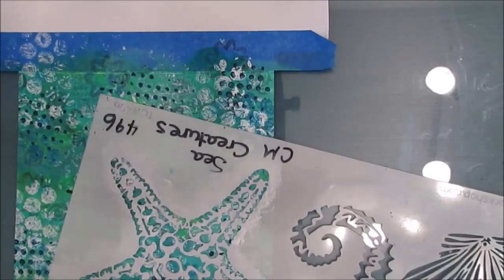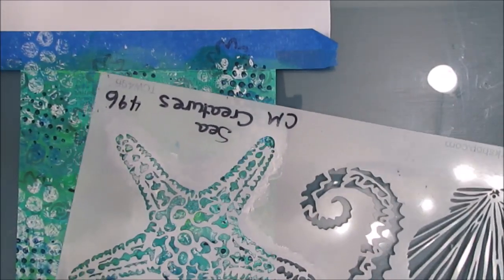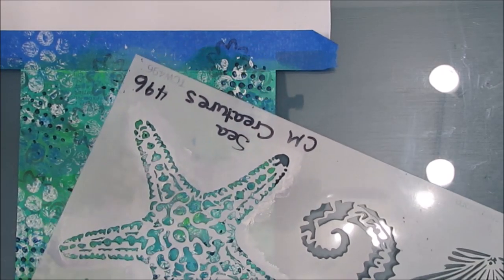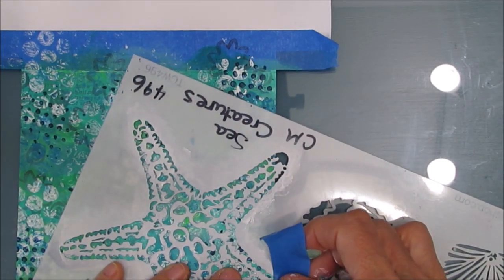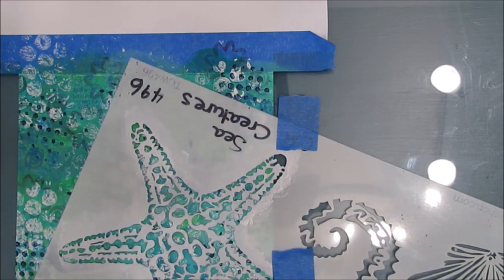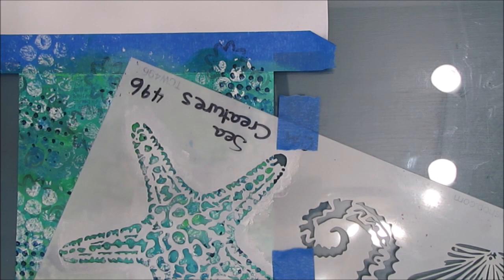Now I'm going to use this sea creatures stencil. This is the 12 by 12 one. I'm going to use this starfish and have it hanging off the edge, so I'm taping this down because I'm going to be using stencil butters.